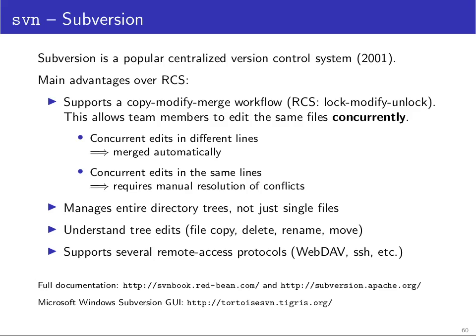Subversion is a version control system that came out in 2001 and it has several advantages over RCS. It doesn't rely on locking files — it supports a workflow where you copy and work on a local copy of the latest version in the repository, modify it, and then merge your changes back. This does not prevent you from editing any files at any time, however at the time you're trying to send your files back to the repository it may tell you someone else has since made changes, but then it offers you to merge these changes with your changes. You can then locally test again whether the merge is still ok and makes sense.